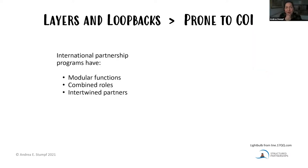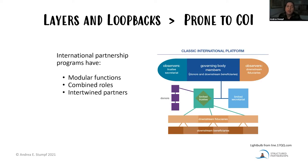One reason it's worth talking about this is that the way these programs are structured makes them very prone to conflicts of interest. That partly has to do with the fact that they have very modular functions, combined roles, and intertwined partners. Let me show you a diagram from the primer — a classic international platform structure. If you're familiar with the World Bank, this is essentially the limited trustee FIF model; in the UN context, it's the MPTF model. Let me show you some of the layers and loop-backs intrinsic to these structures.